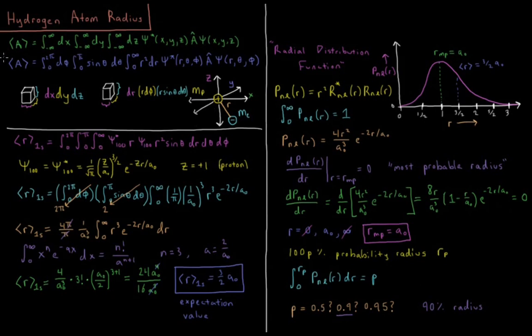So we'll remind ourselves that in three dimensions the expectation value or the average value of a given property A would be equal to the integral overall space. So integral minus infinity to infinity dx minus infinity to infinity dy minus infinity to infinity dz of psi star of xyz times A, the operator representing that property, acting on psi of xyz. So this would be our integral there.